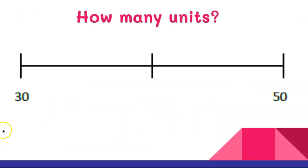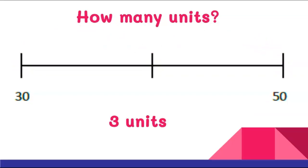So let's practice. How many units or hash marks are on this number line? That's easy — we can just count them. Put your finger at the first one and count: one, two, three. There are three units on this number line.